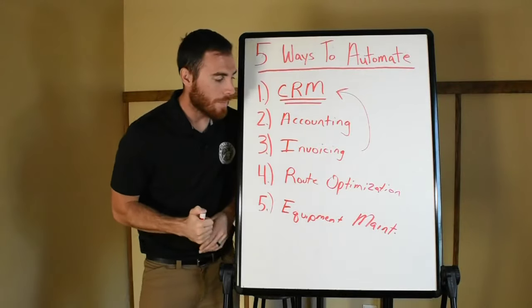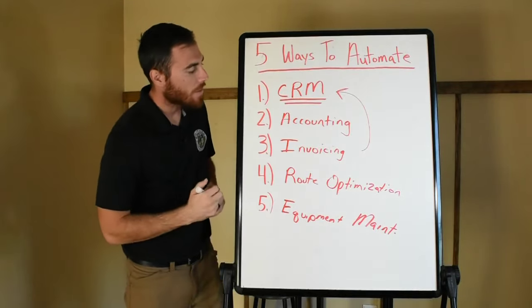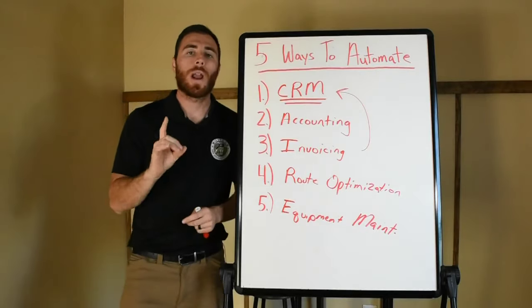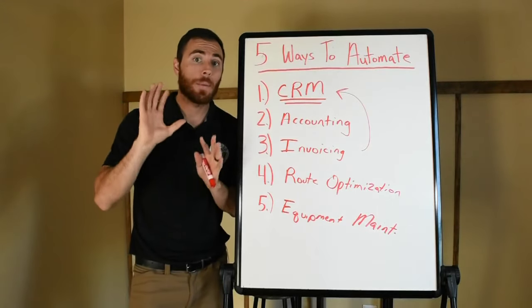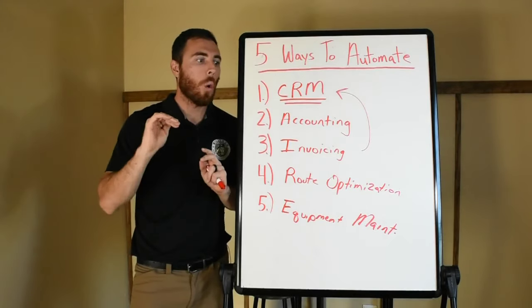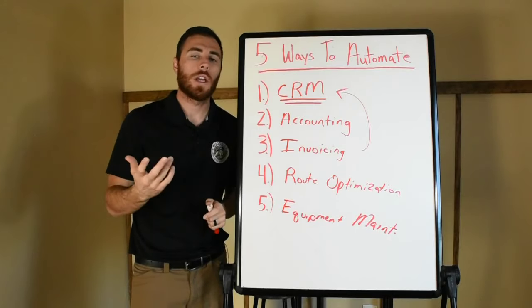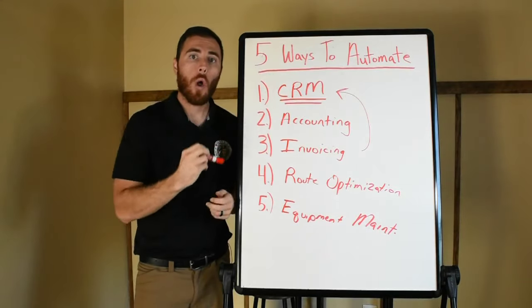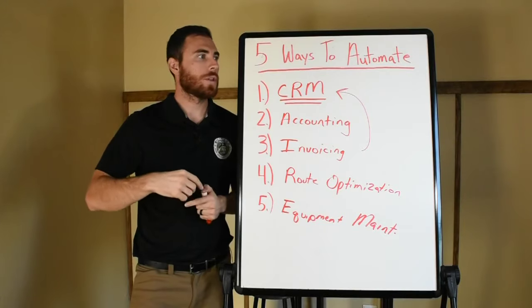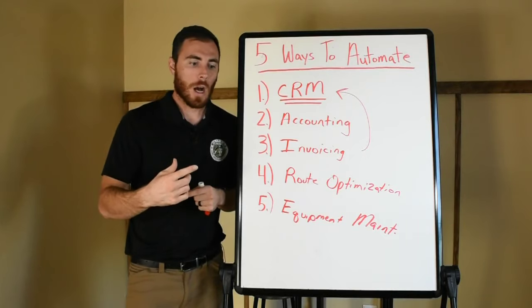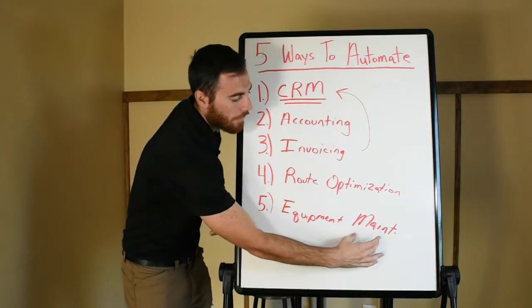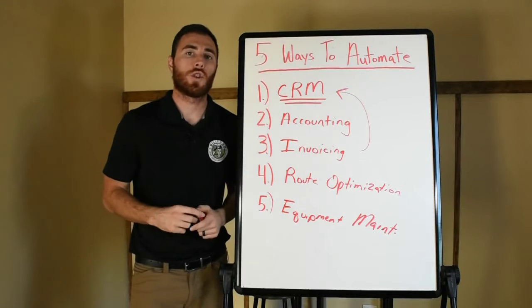So how do we automate equipment maintenance? If you don't have a CRM yet, you can create a physical system — get a whiteboard in your garage or wherever your equipment is stored and write down all the equipment you have. Then every month you change the oil on the mowers, maybe every week or every day you blow out the air filters, change the blades, and really start to build some kind of process so you can begin to track it all.